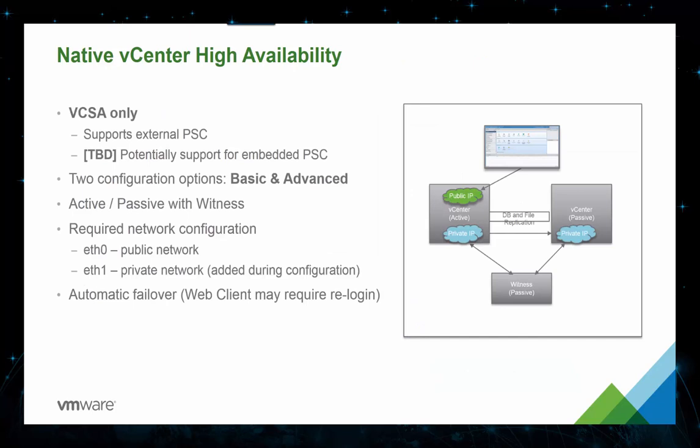A much-needed new feature is native vCenter High Availability, or HA. The HA supports an external PSC and potentially in future releases the embedded PSC. HA is configured with one vCenter Server as active and one as passive, with a witness. During failover situations, it will automatically fail over. If you're already in the vSphere web client and actively using it, you may not even realize it's failed over — worst case, you may just need to re-log back in.